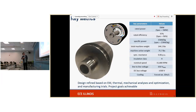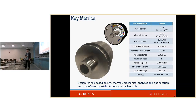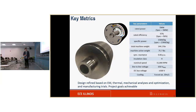So here are the key metrics for our motor. This table with the picture shows the key metrics of our motor as of now. We have a rated power of one megawatt, rated efficiency of 97%, which is all within the specs. Our weight clocks in at 144.2 pounds right now, and that gives us a specific power of 15 kilowatts per kilogram, which is also within our specification.